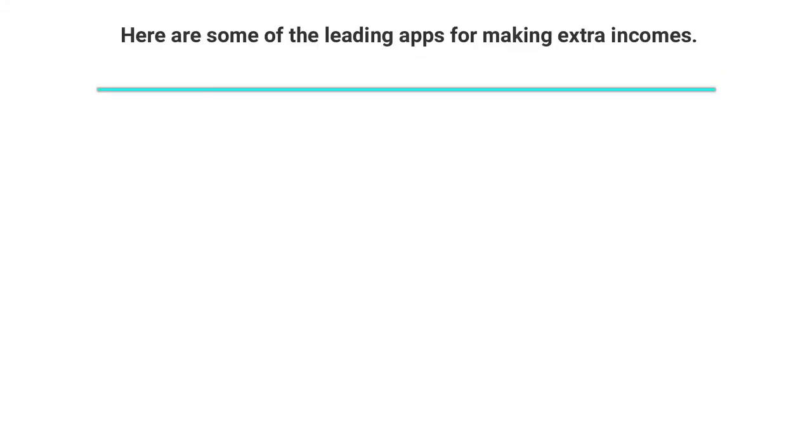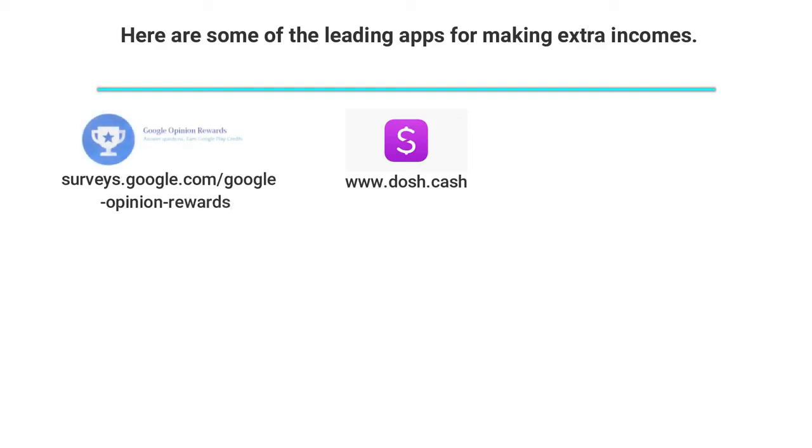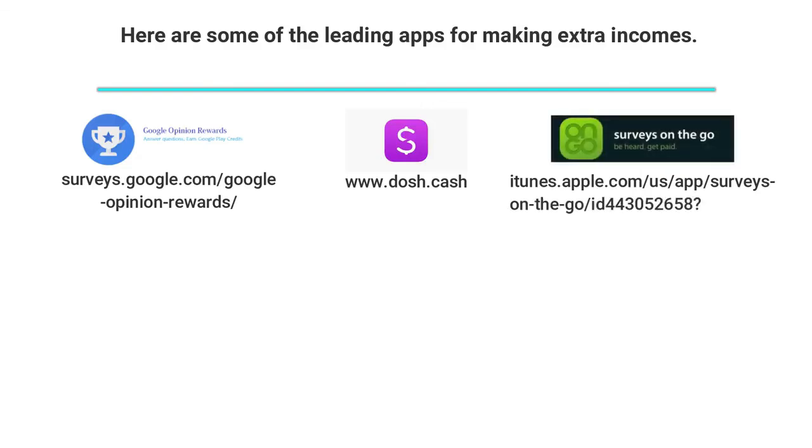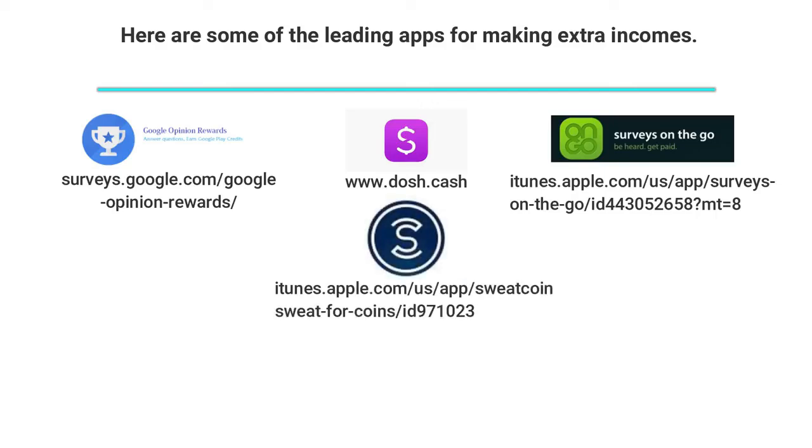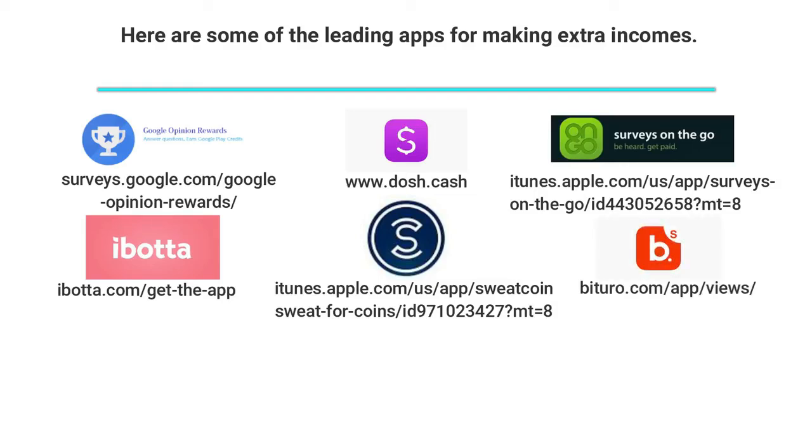Itunes.apple.com/us/app/surveys-on-the-go, itunes.apple.com/us/app/swagbucks-sweat-for-coins, ibotta.com, ibotta.com/get-the-app, vaturo.com/app/views, receipthog.com, foap.com/photographer, and getpaid.com.